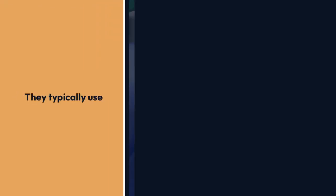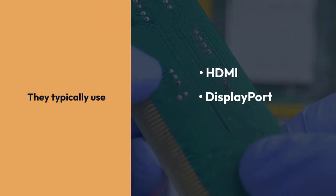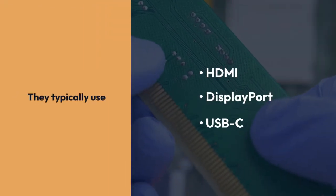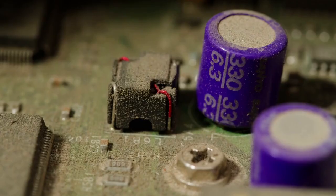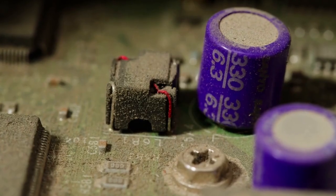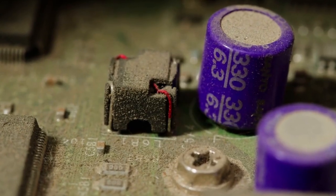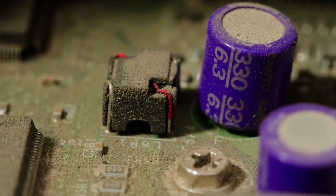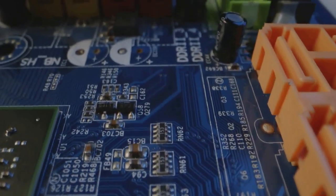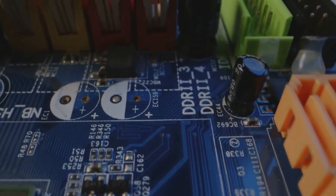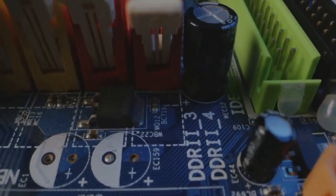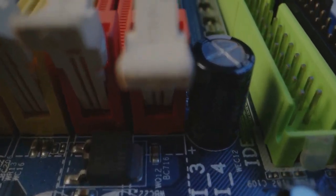Modern motherboards typically use HDMI, DisplayPort, or USB-C for video output. If your motherboard does have a VGA port, great. If not, you'll need a video card with a VGA port or an adapter.